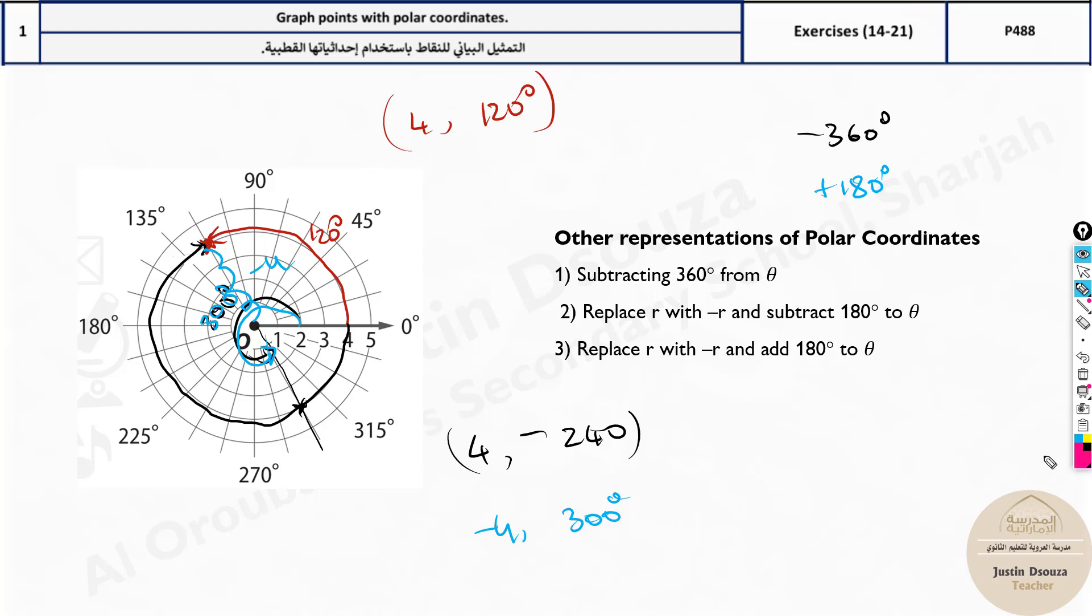And lastly, what do we have over here? This side also is possible. So what you do is subtract 180 degrees. Now when you subtract 180, you'll get minus 60. So this is minus 60 degrees and then trace back one, two, three, four. So it's minus four, minus four comma minus 60. So these are all the four ways: one, two, three, four. This is the given question. But these are the three different ways to represent the same point.